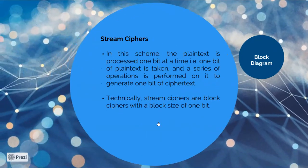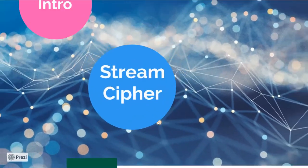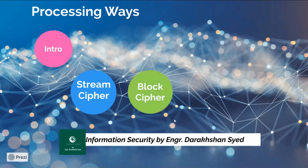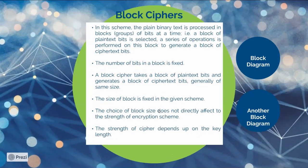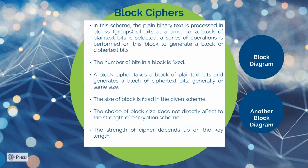After discussing all about stream cipher, we have block cipher. So how does block cipher work? Block cipher is such a scheme — as the name suggests — in which your plain text or binary text is processed in blocks or groups of bits.